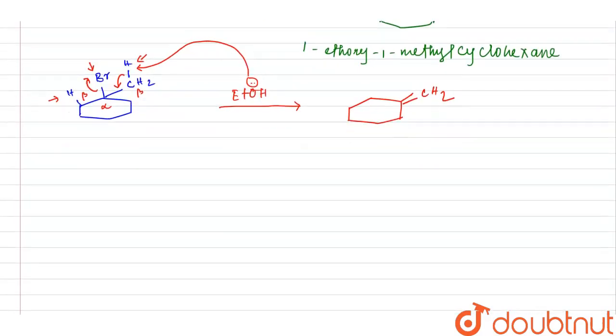And in another way, EtOH, this hydrogen can be abstracted and the product will be double bond here and here is a hydrogen.